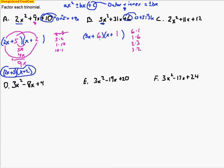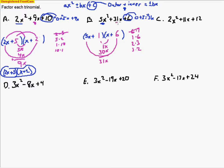Starting with 6 and 1: the outside terms give 6x and inside give 5x, which only adds to 11x — not 31, so that doesn't work. Next, switching to 1 here and 6 here: 1 and x multiply to make 1x, and 5 and 6 multiply to make 30x. That's smaller than 31, and when we add them we get 31x — it worked! We know 1 and 6 multiply to make 6, and 5x and x multiply to make 5x squared. So the answer is (5x + 1)(x + 6).